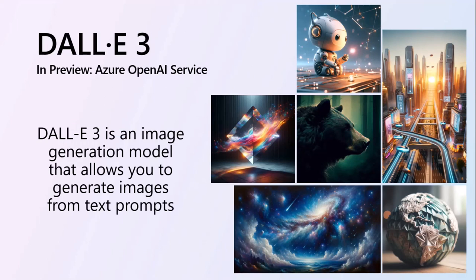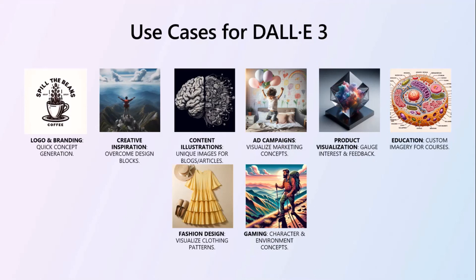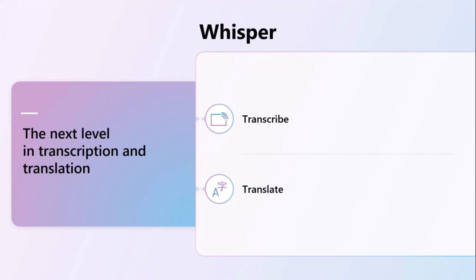The DALL-E 3 model is an image generation model that allows you to generate images from text prompts. Use cases include product visualization, education, gaming, fashion design, logo branding, and many more. The Whisper model is the latest state-of-the-art from OpenAI — incredibly powerful, achieving human-level text generation. It supports nuanced instructions and essentially helps you transcribe and translate your audio.